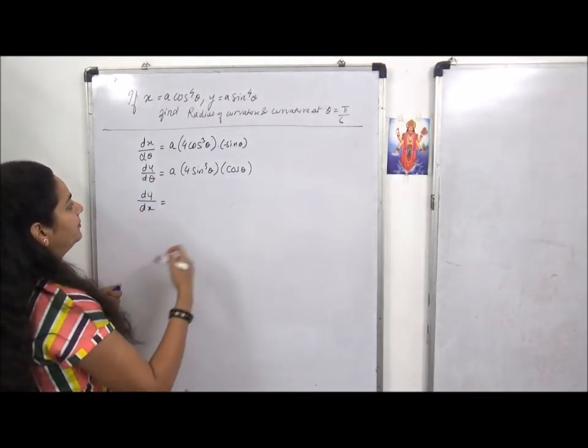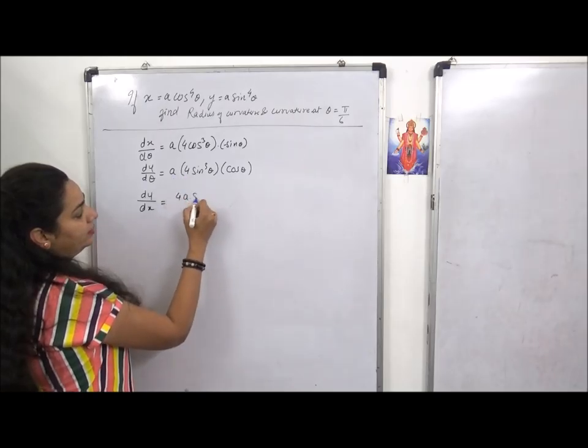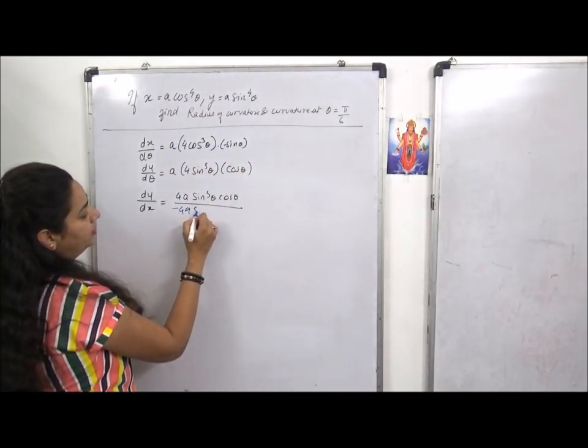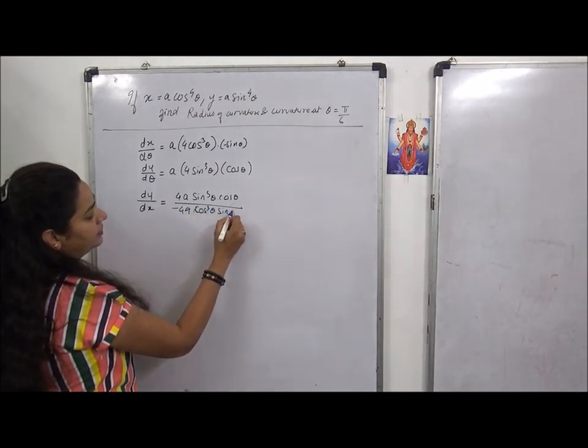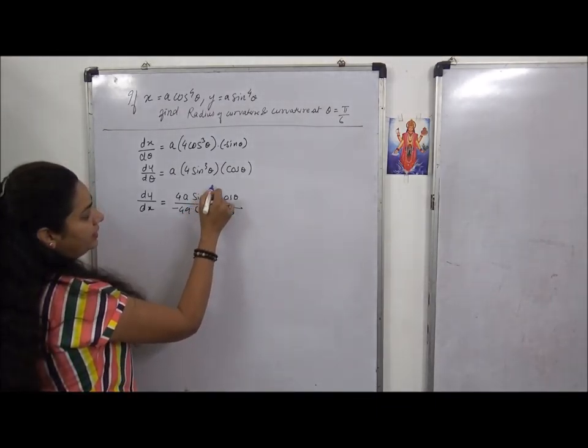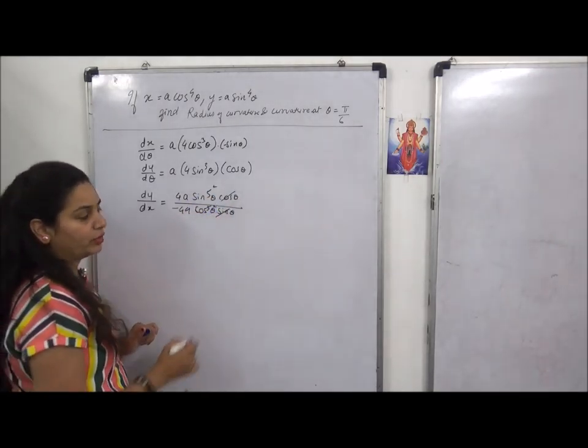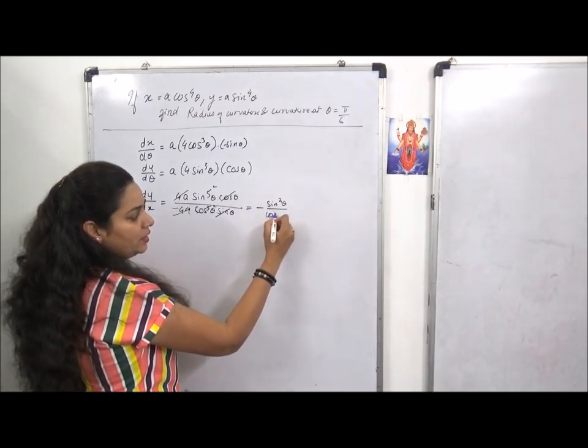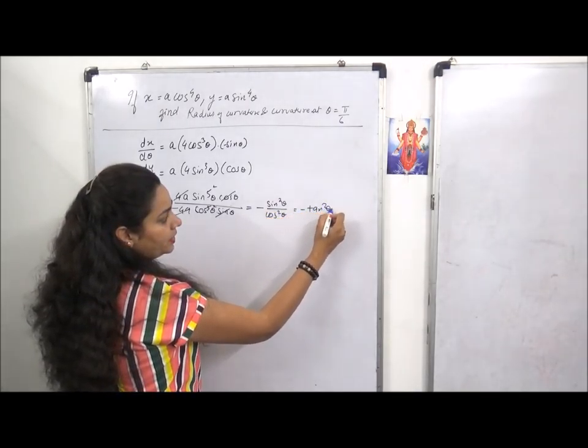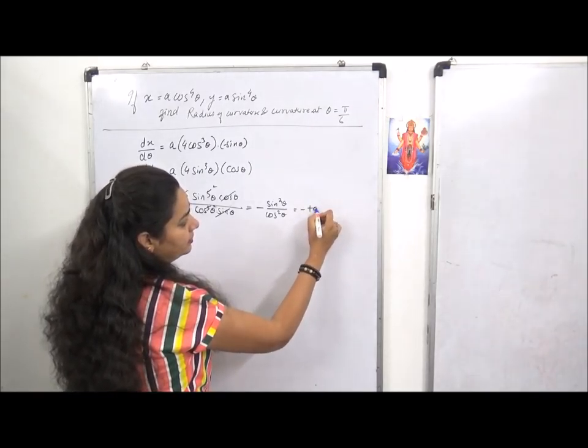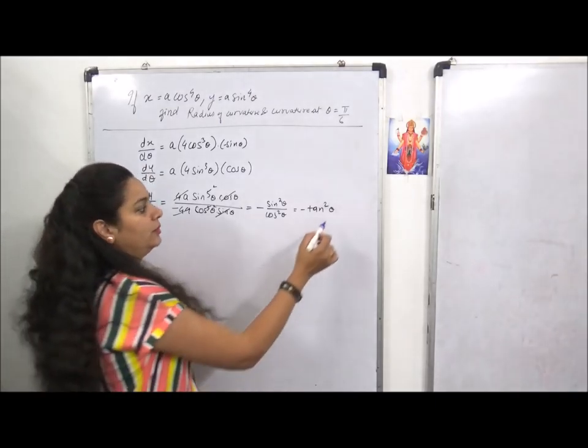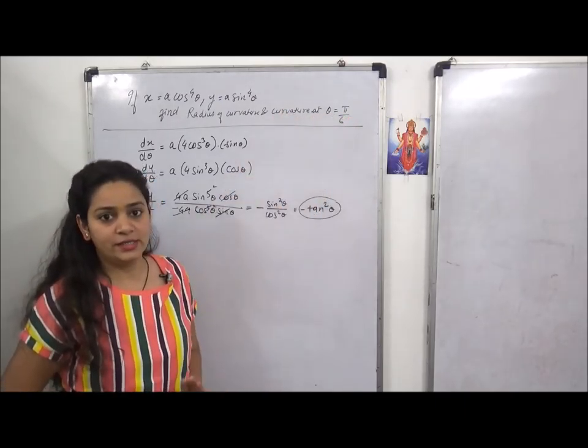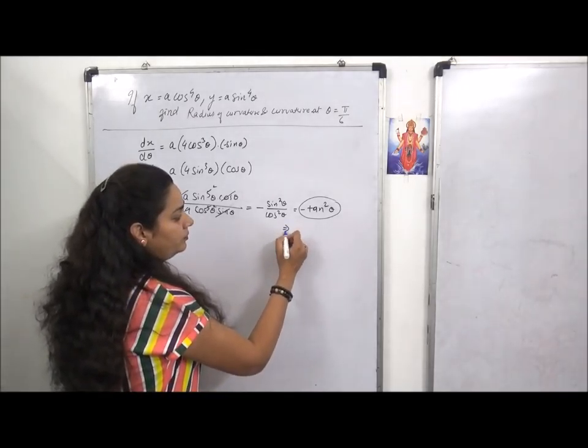Now dy by dx - for this step was necessary because x and y were separated. We had to do dy/dθ upon dx/dθ. Y should be up and x should be down because dy by dx. So we get 4a sin cube theta cos theta upon minus 4a cos cube theta sin theta. One sin and one cos cancel, giving minus tan square theta.